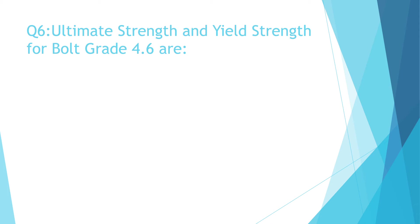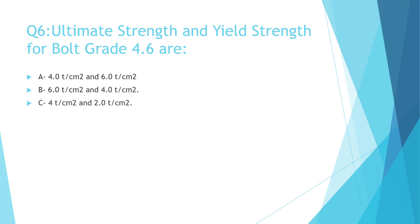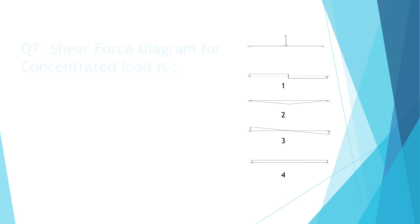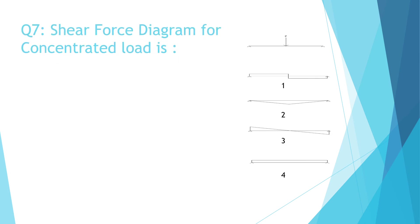Question 6: Ultimate strength and yield strength for bolt grade 4.6 are: a) 4 ton/cm² and 6 ton/cm², b) 6 and 4, c) 4 and 2, d) 4 and 2.4 ton per square centimeter.